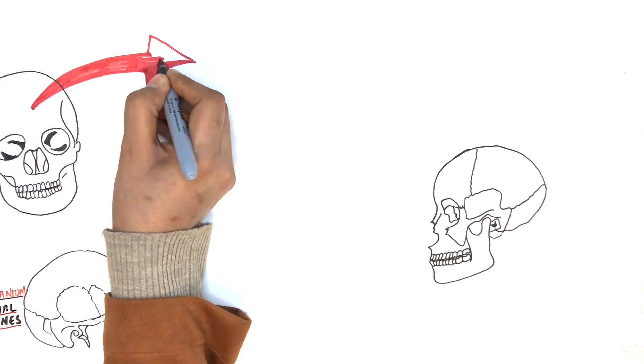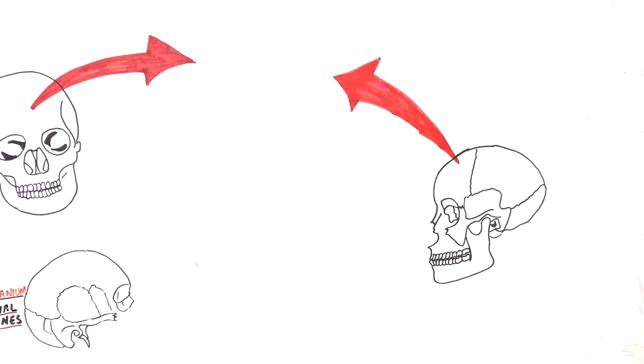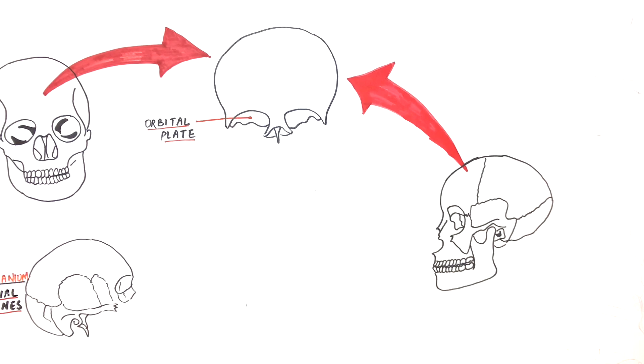The frontal bone, as the name suggests, is located at the most front of the skull. The frontal bone makes up the superior, medial, and somewhat the lateral parts of the orbital plate. In short, the majority of the eye socket is made up of frontal bone.